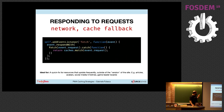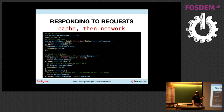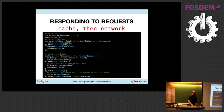The network-first strategy is the old approach used by social networks: try to recover the latest data from the network, but if the network fails, show the cached data. The cache-then-network strategy is newer: you immediately show the user the cached data, and then simultaneously recover the latest data from the network and update the feed.